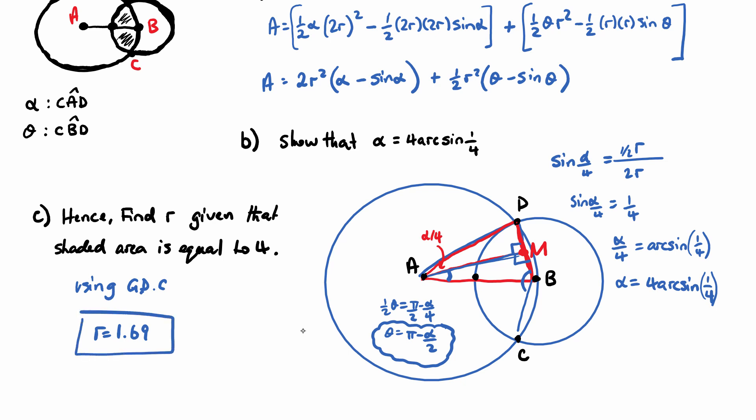Now for the working out, maybe just put the working out here for theta. We know that theta is pi minus alpha on 2. And if we accompany it with this drawing, refer to drawing or to sketch. That's the answer to part C.